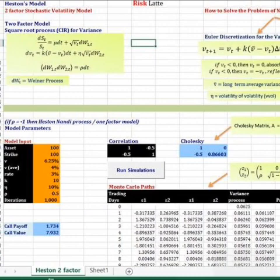It's a two-factor model. The asset follows the diffusion process. The variance of the asset also follows the diffusion process.